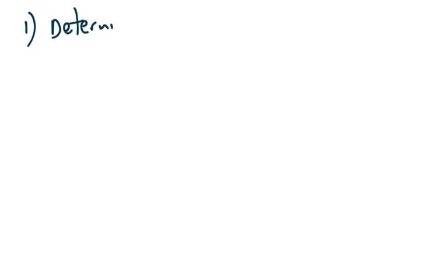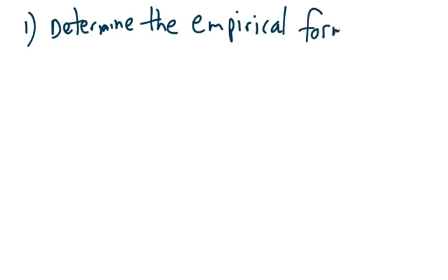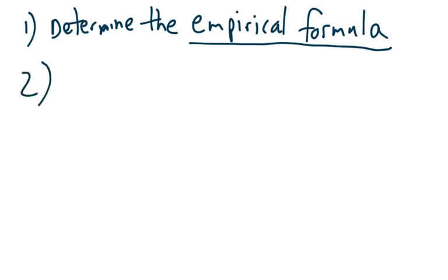The first thing you need is to determine the empirical formula. Sometimes this step is done for you — they already give you the empirical formula, which is great because you can go straight into the second step. Sometimes you have to find the empirical formula yourself and they would give you the data.